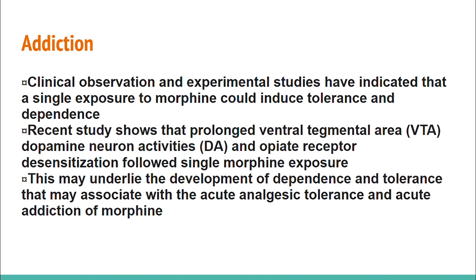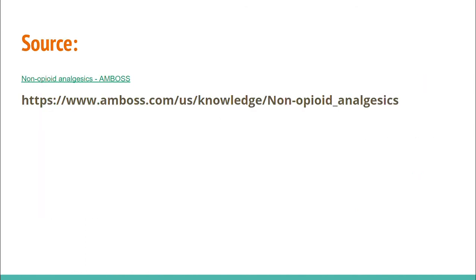Clinical observation and experimental studies have indicated that a single exposure to morphine could reduce tolerance and dependence. Recent studies show that prolonged ventral tegmental area dopamine neural activities and opiate receptor desensitization followed single morphine exposure, which may underlie the development of dependence and tolerance associated with acute analgesic tolerance and acute addiction to morphine. Thank you so much for listening, and God bless.